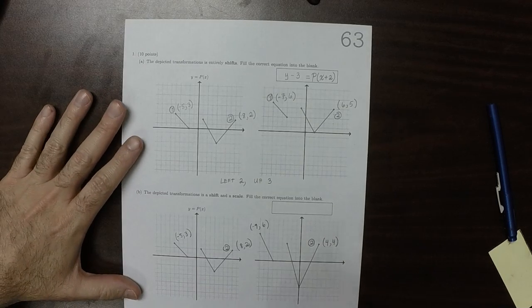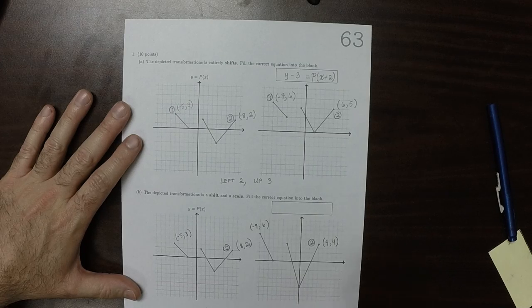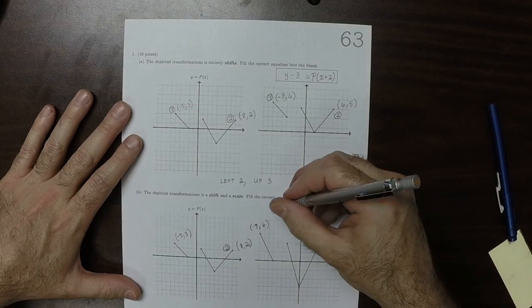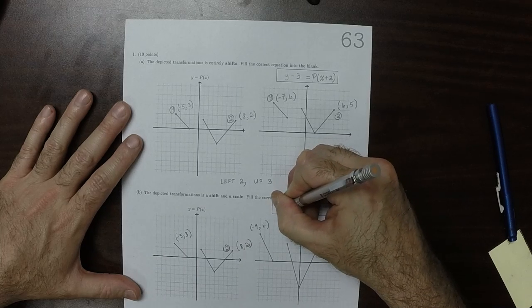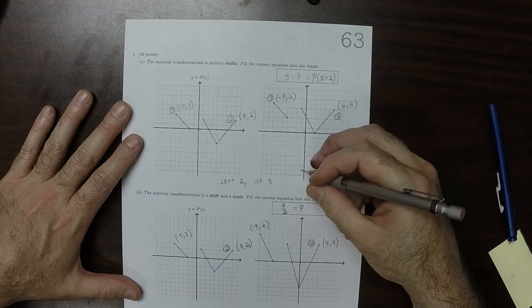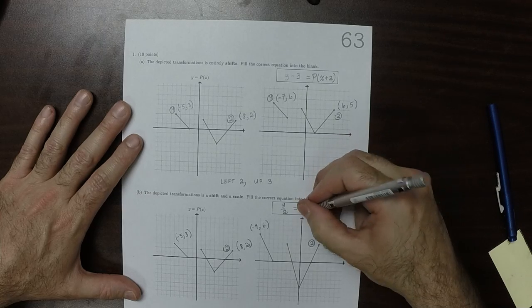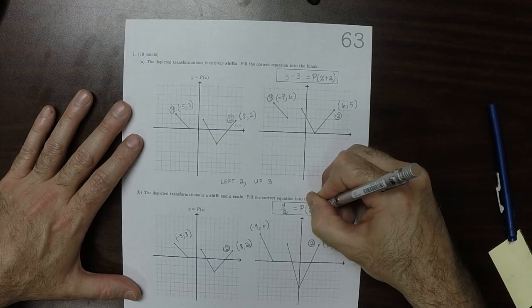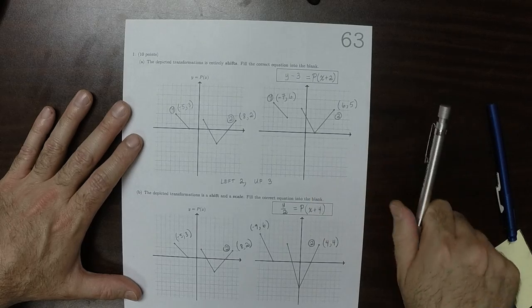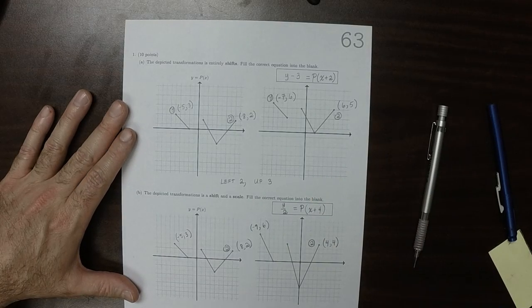Okay. So this must be it left 4, vertical stretch 2. So that would be y over 2 is equal to p of x plus 4. Thank you very much.